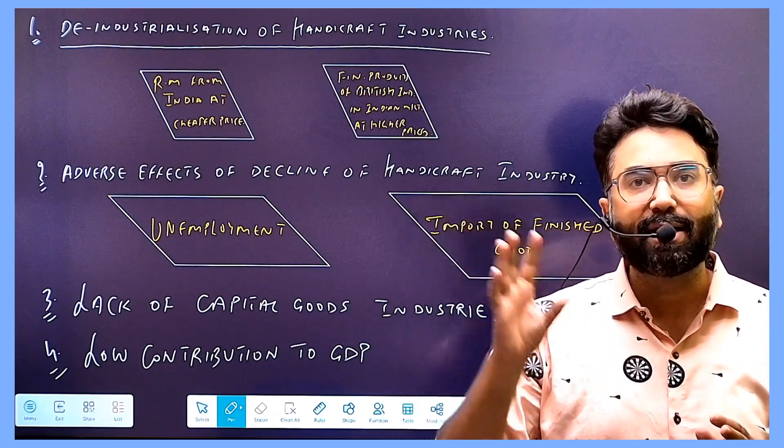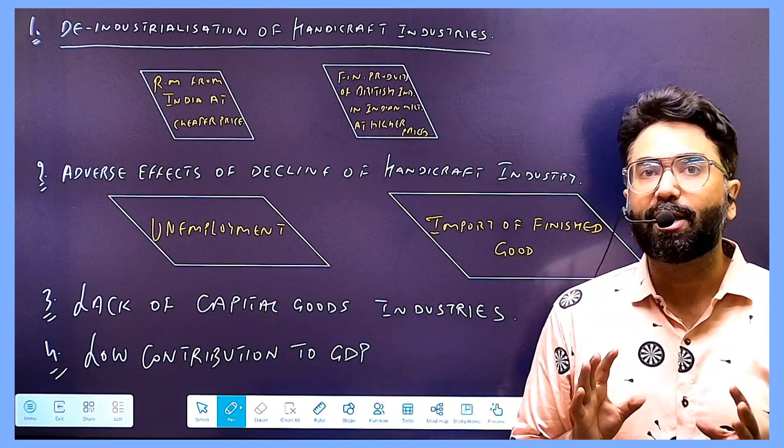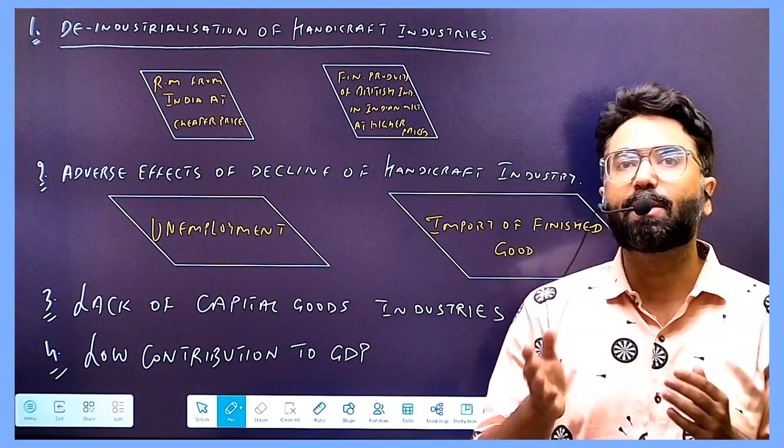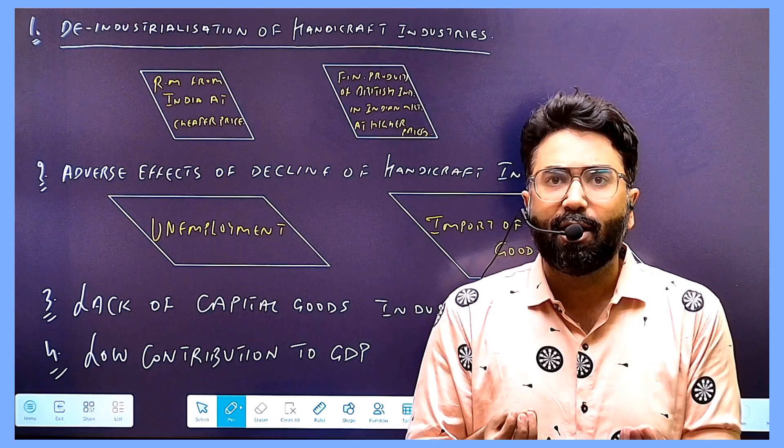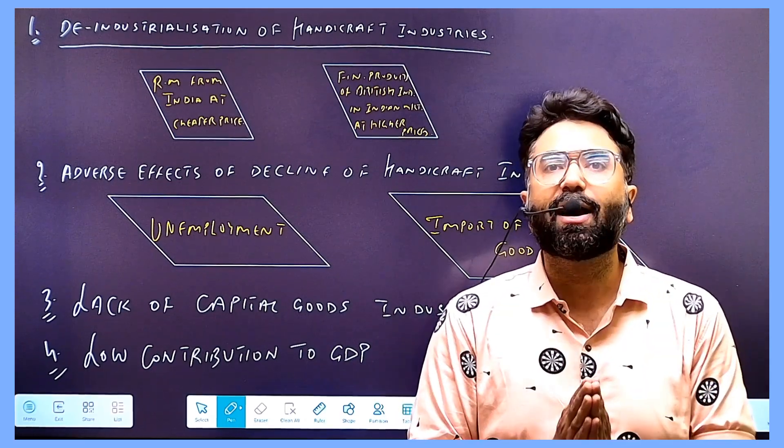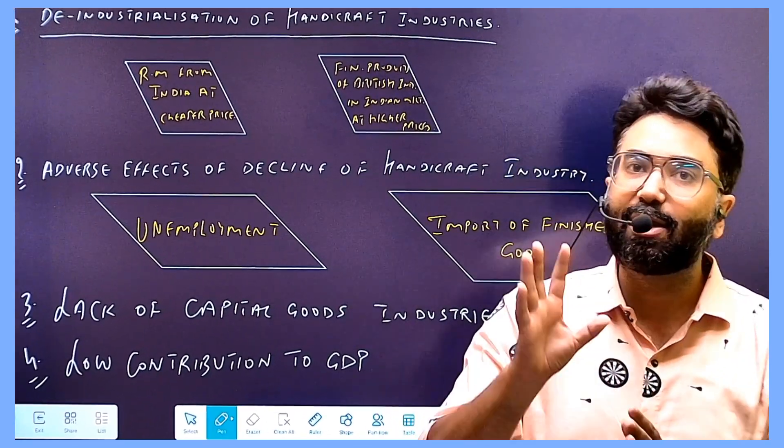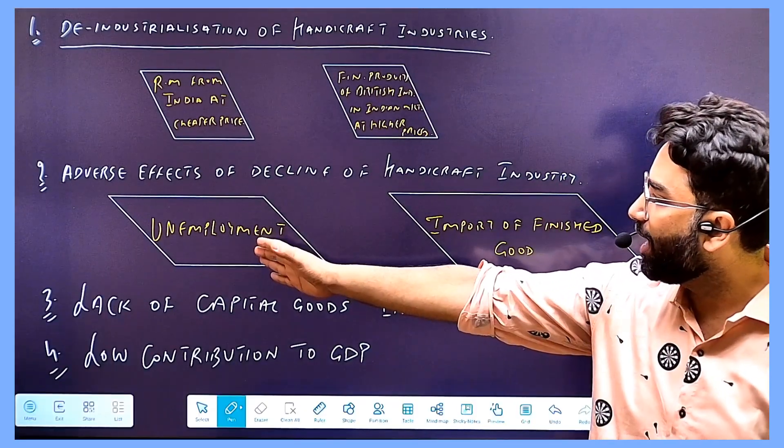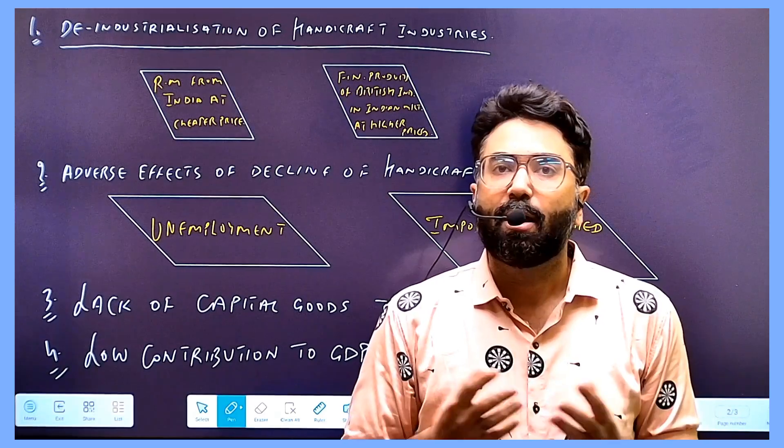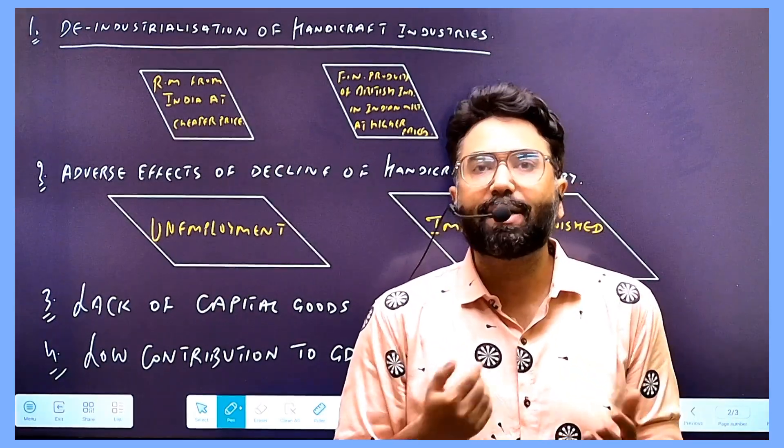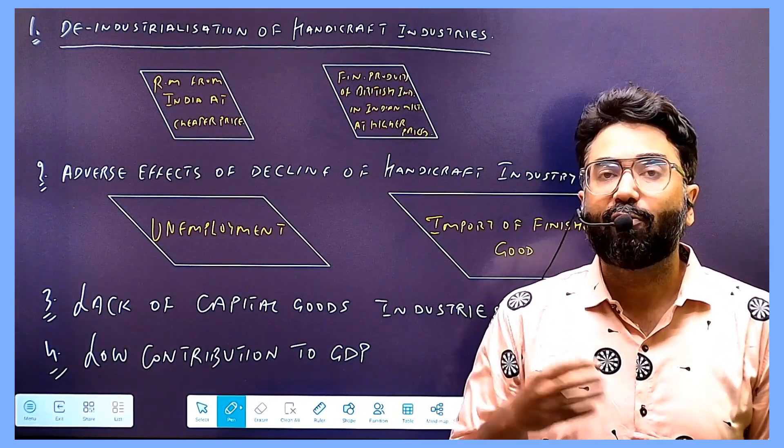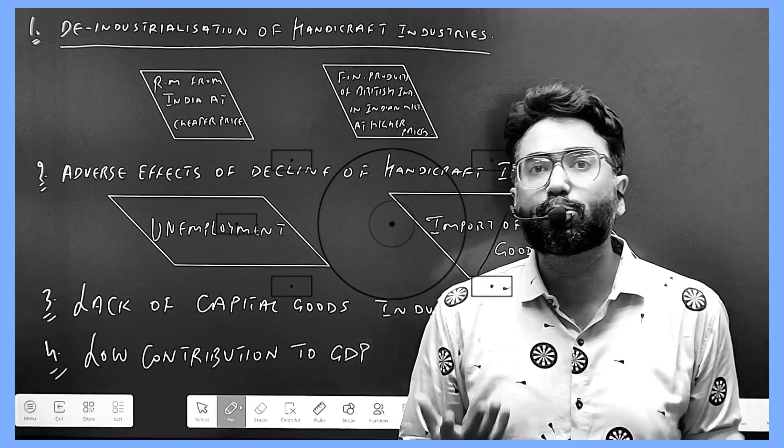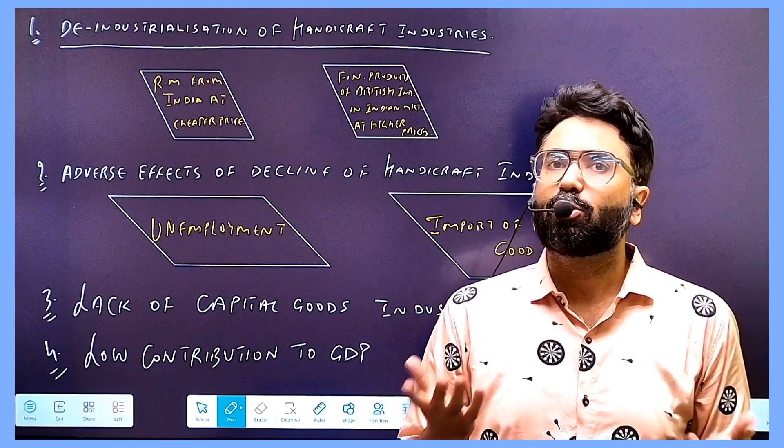Let me tell you that the British machine-made goods from outside had taken over the Indian market. India's domestic producers, India's domestic industries, the small ones could not survive against the British goods. The British machine-made goods were cheaper and dominated the market.